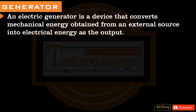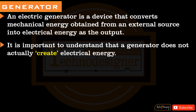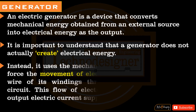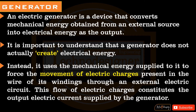An electric generator is a device that converts mechanical energy obtained from an external source into electrical energy as the output. It is important to understand that a generator does not actually create electrical energy. Instead, it uses the mechanical energy supplied to it to force the movement of electric charges present in the wire of its windings through an external electric circuit. This flow of electric charges constitutes the output electric current supplied by the generator.